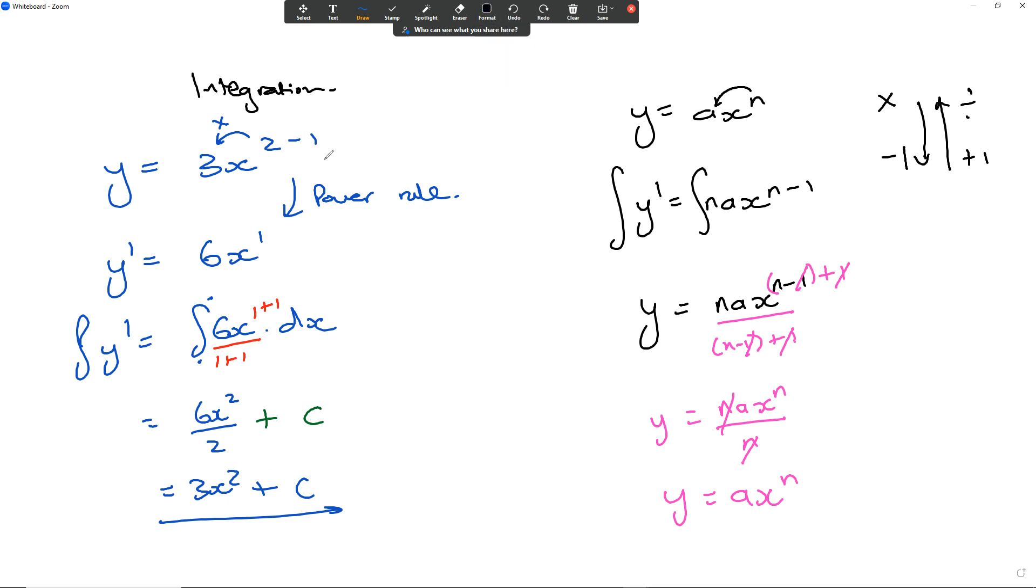Now we know the original function is plus a 0. The constant specifically for this is 0, but we can't really state that because we don't know yet until we are provided values. Once you've integrated something, it goes back to the original function.